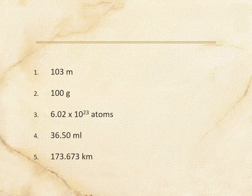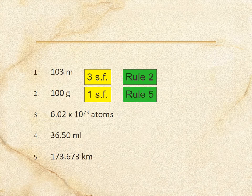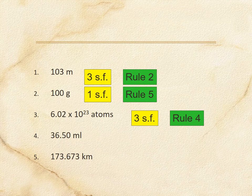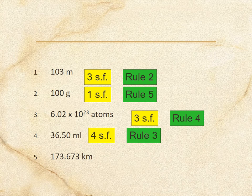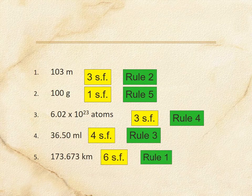More practice: 103 meters is three sig figs. 100 grams without a decimal is one. 6.02 × 10²³ atoms — the power of ten doesn't matter — so three sig figs. 36.50 has a zero after the decimal following a real number, so four sig figs. And 173.673 has no zeros, everything is significant, so six sig figs.